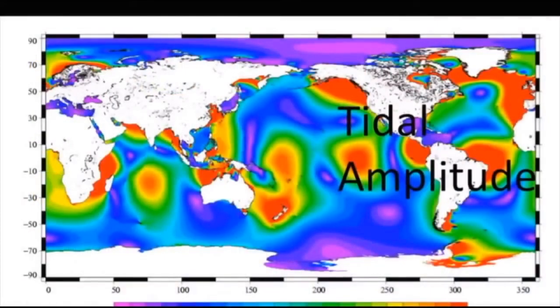This is a map of tidal amplitude, which is the difference between the low and the high tide at a given place. What that means is that the low tide might be a meter below sea level and the high tide might be a meter above sea level. And that would be a tidal amplitude of two meters, which is considered very high. And those high tidal amplitudes are here in red.